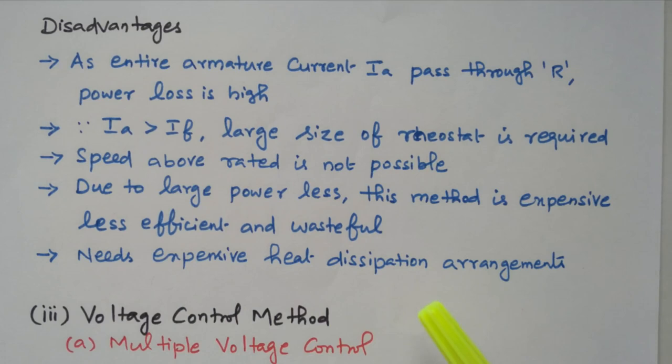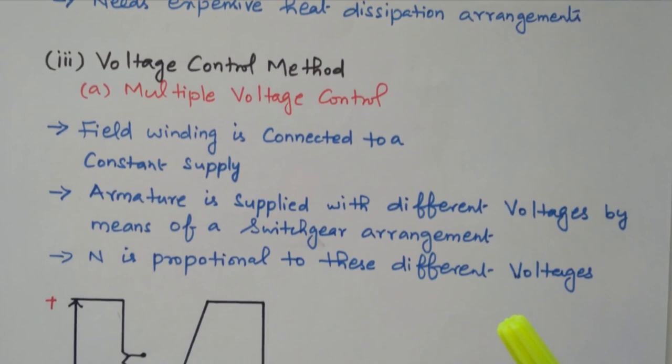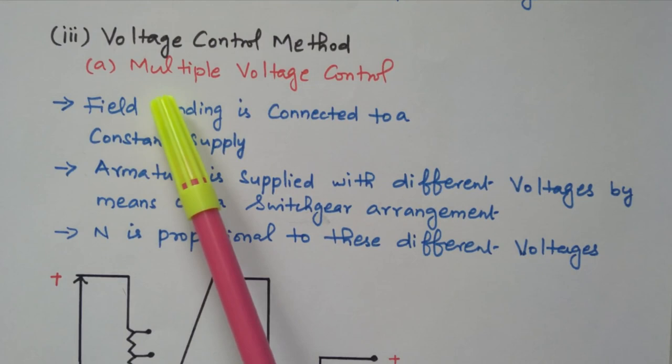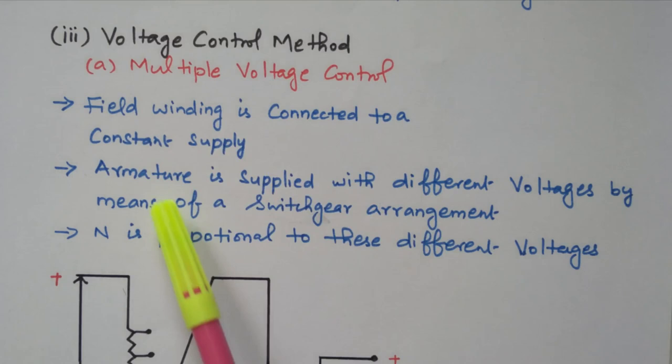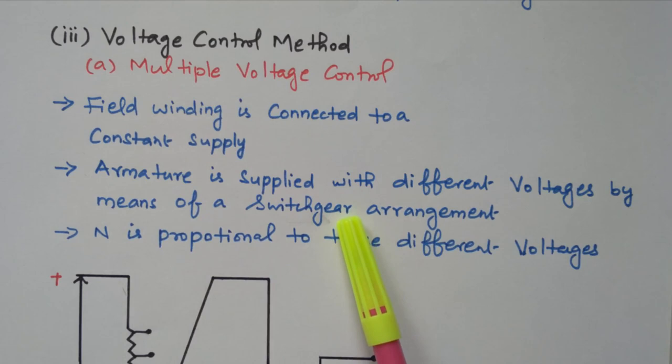Now we will go to the third method: voltage control method. By varying the applied voltage we can vary the speed of the motor. In this method there are two types. The first is multiple voltage control. The field winding is connected to a constant supply — there is no variation in the field winding. The armature is supplied with different voltages by means of a switch gear arrangement. By changing the switch gear we can apply different voltages, so for a given voltage the motor will rotate at a particular speed, since speed is proportional to the applied voltage.